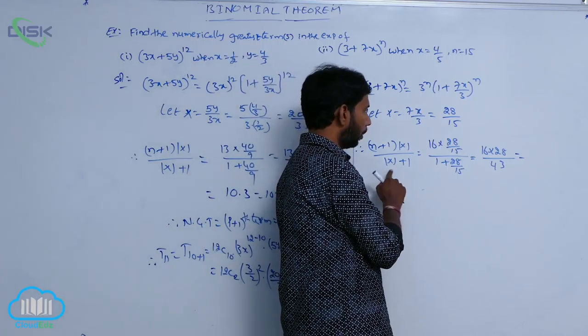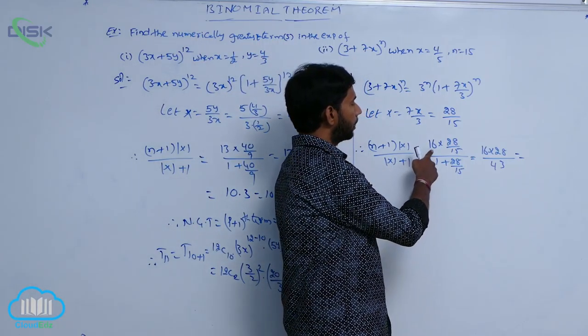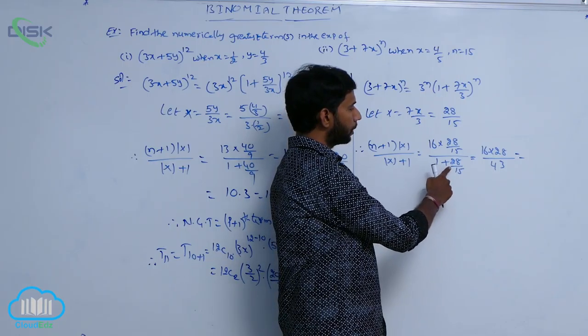Okay, next to me, n plus 1 into mod x by mod x plus 1 equal to 16 into 28 by 15 by 1 plus 28 by 15.